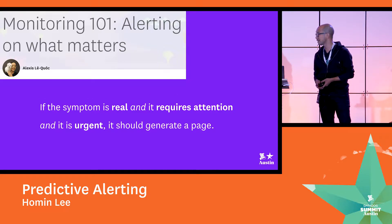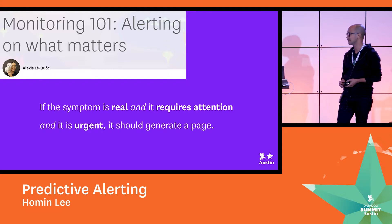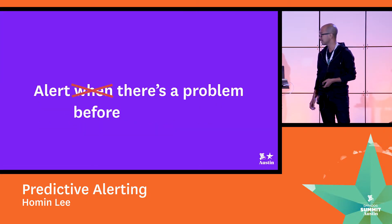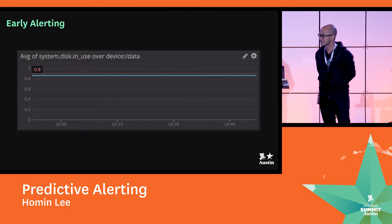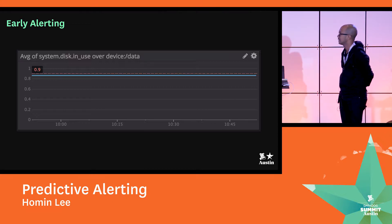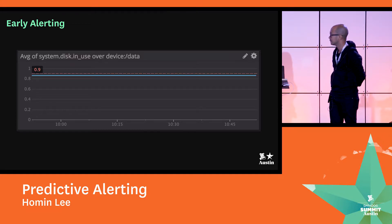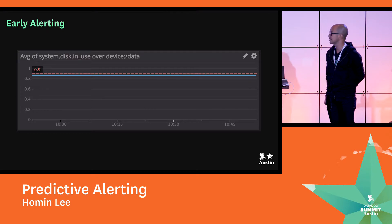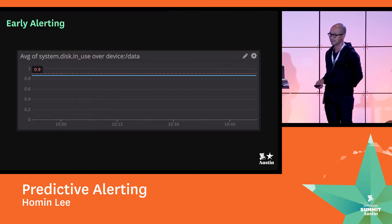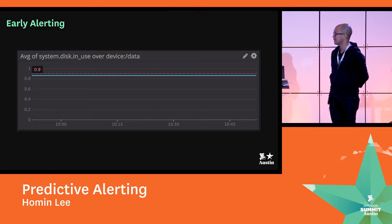As suggested by Alexei in his Monitoring 101 guide, you actually only want to alert if you're alerting on a symptom that is: one, real; two, requires attention; and three, is urgent. But the guide has an exception to the rule for early warning signs. The classic example is disk space — unlike running out of memory or CPU, if you run out of disk space, your system's just going to die. When we look through the monitors that our users have set up, one of the most popular ones are monitors on disk space with a threshold of 80% or 90%. The idea is that once the alert triggers, you clear some logs, reset your cache, or delete data that exists somewhere else.